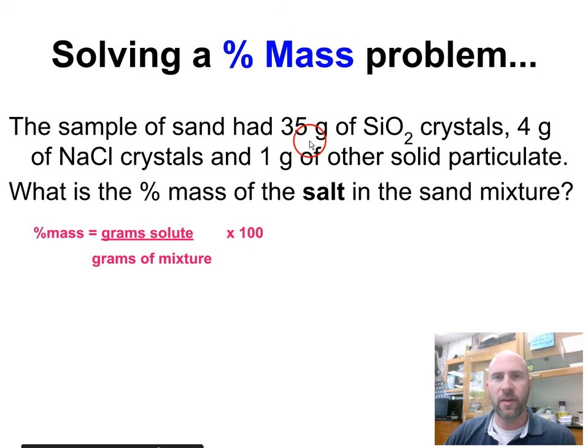I've got a sample of sand with 35 grams of silica crystals, so this is just sand, 4 grams of sodium crystals or salt, and 1 gram of other solid particulate. What's the percent mass of the salt? We're asking you, how much salt, or what percent of this whole mixture is salt? To do this, I just have to do grams of the solute, or the grams of the smaller part. What are we trying to find? We're trying to find salt. And I know that I've got 4 grams. So that's the part.